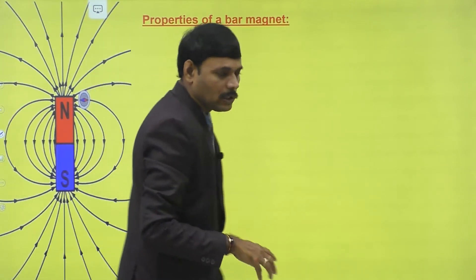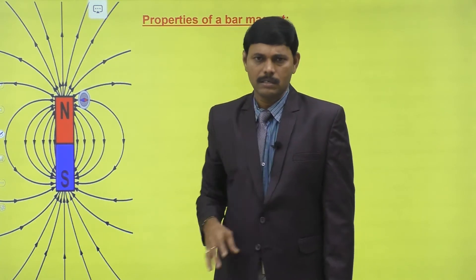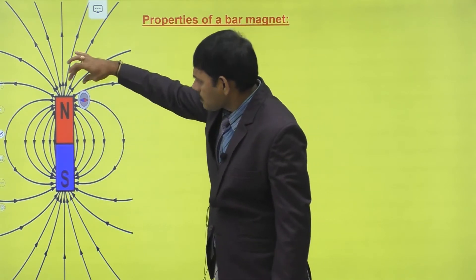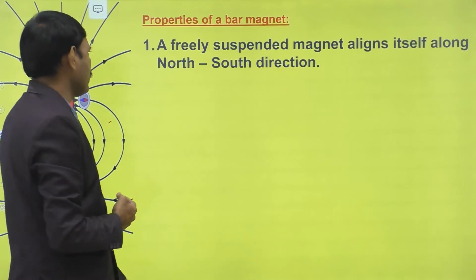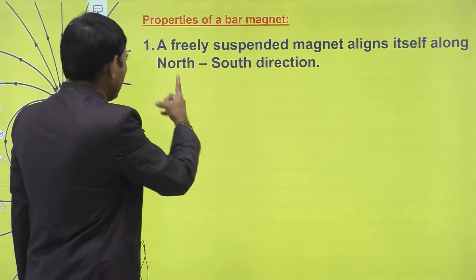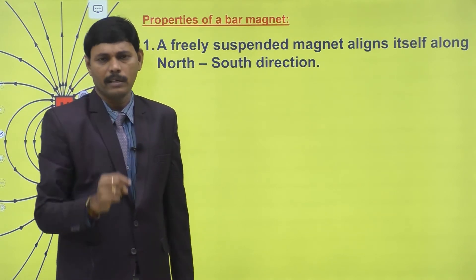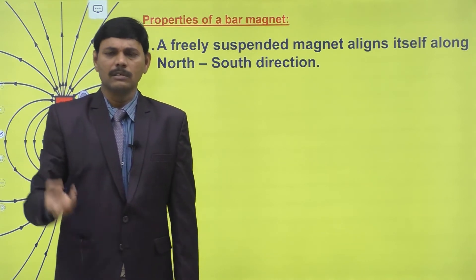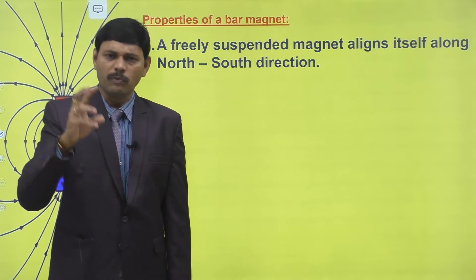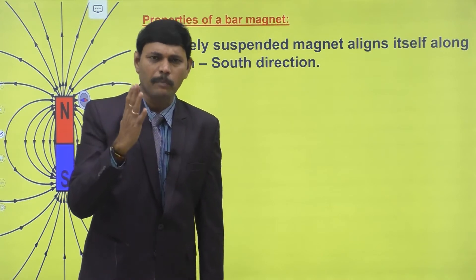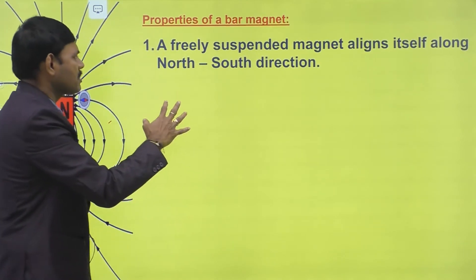Now comes the properties of a bar magnet. A bar magnet is a substance like magnetite with a length, width, and attracting ability concentrated at its edges — the poles. The first property: a freely suspended magnet aligns itself along the north-south direction. Because the earth itself is a natural magnet, a freely suspended bar magnet is influenced by earth's magnetism and always aligns in the north-south direction.